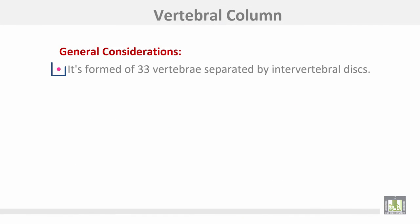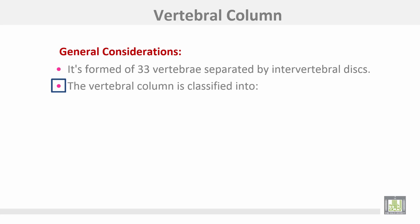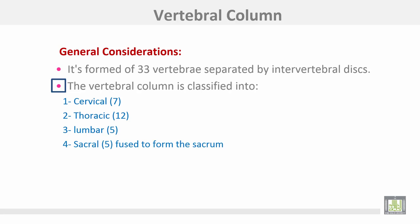The vertebral column is formed by 33 vertebrae separated by intervertebral discs. It is classified into seven cervical, 12 thoracic, five lumbar, and five fused sacral vertebrae forming the sacrum, with four fused coccygeal vertebrae forming the coccyx.